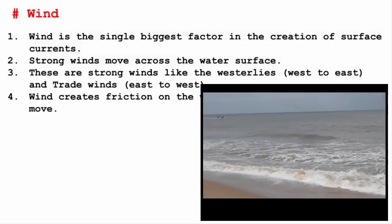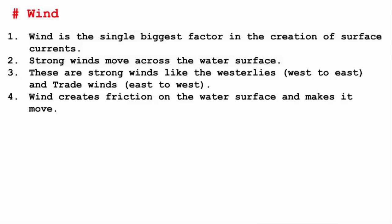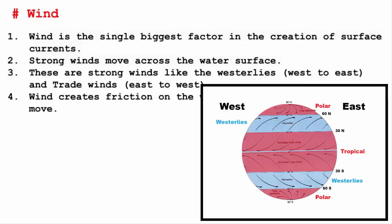Now these strong winds are continuous and they are constantly present both during day and night. The major winds are the westerlies, which blow west to east, and the trade winds, which blow east to west.